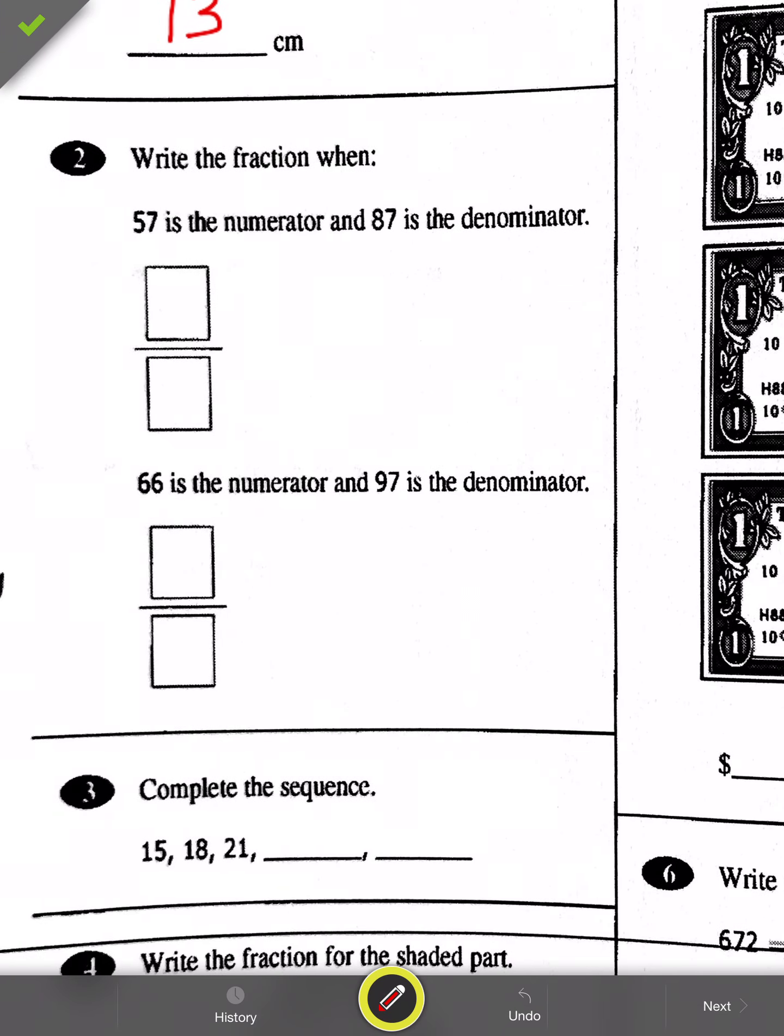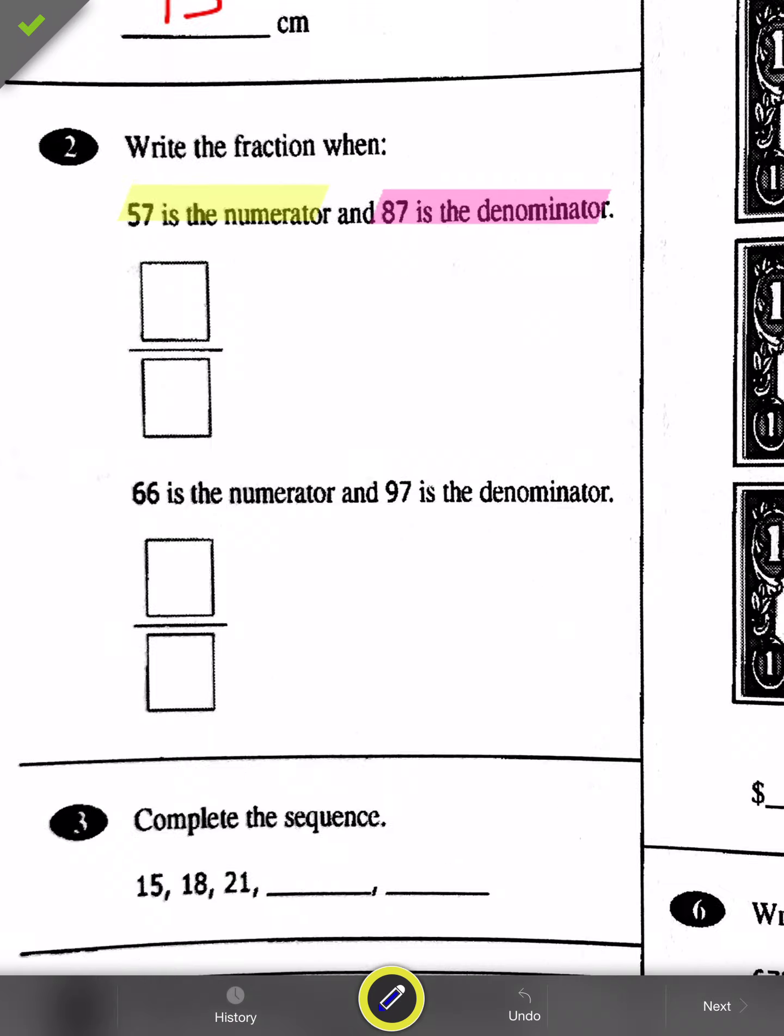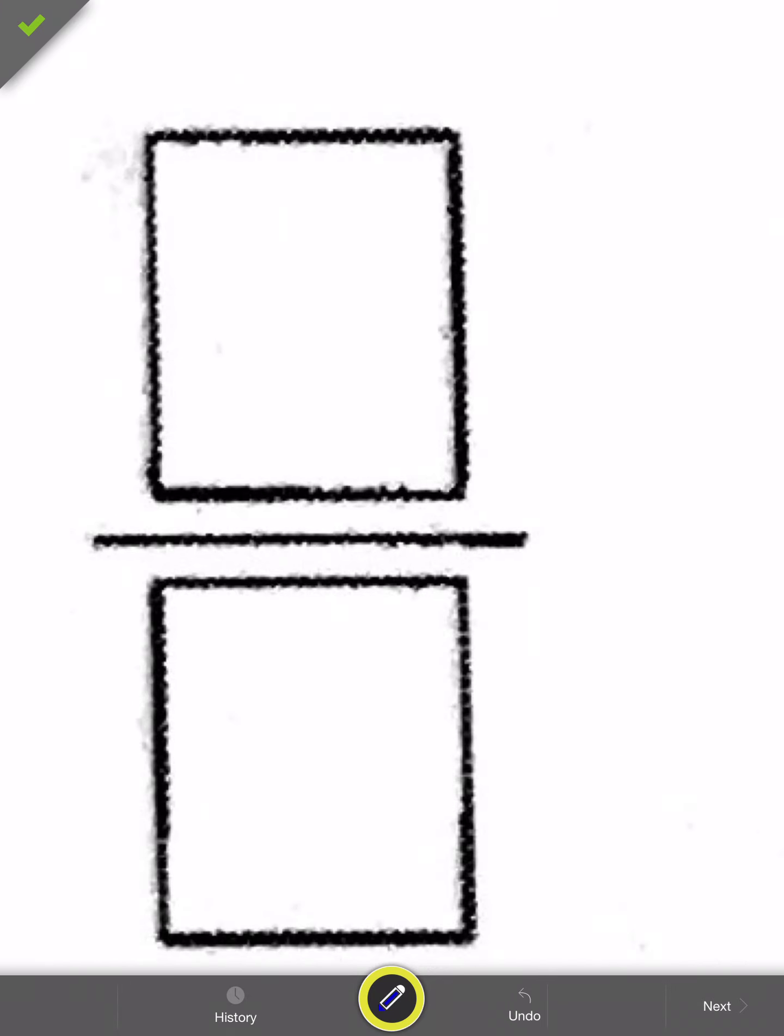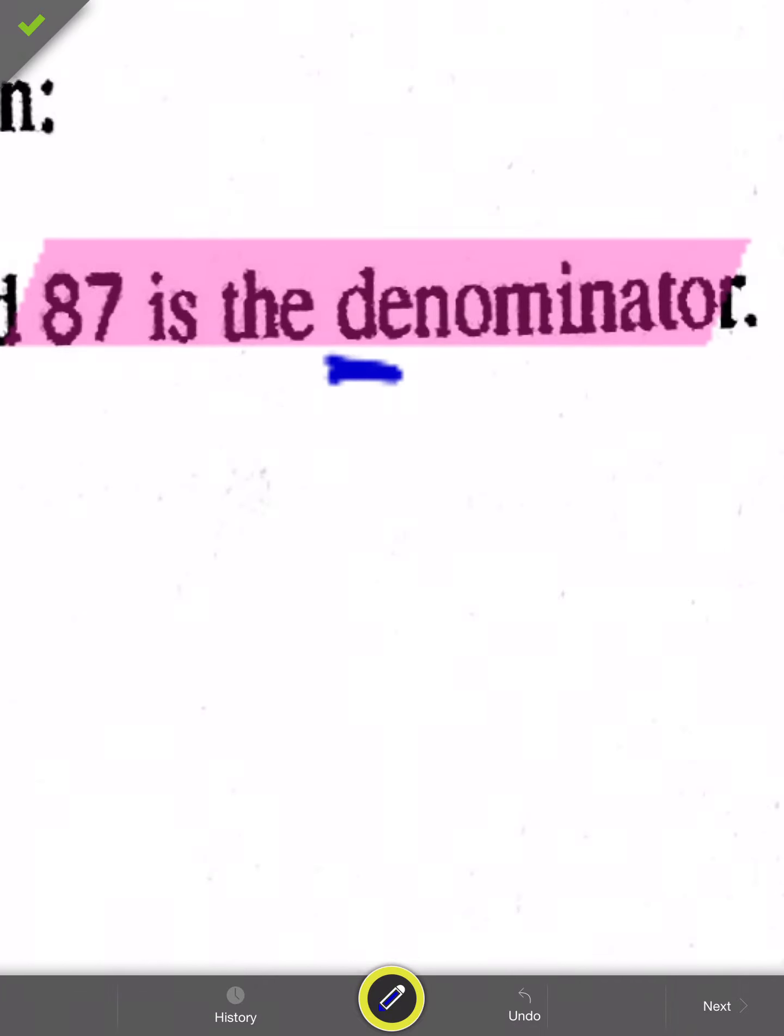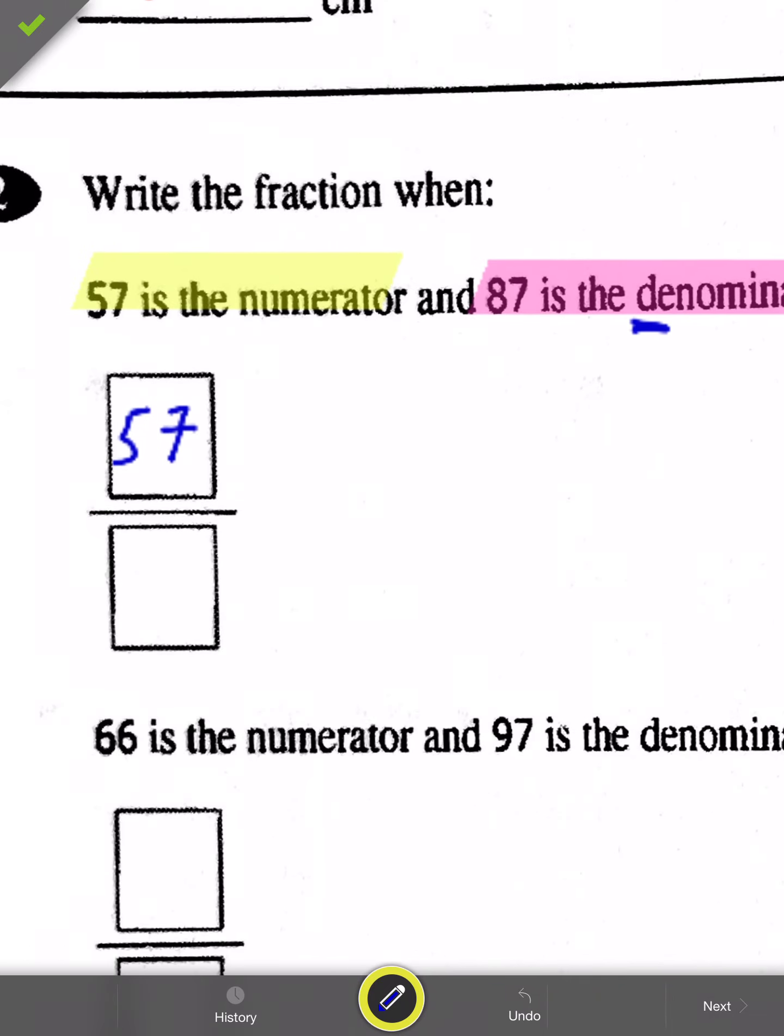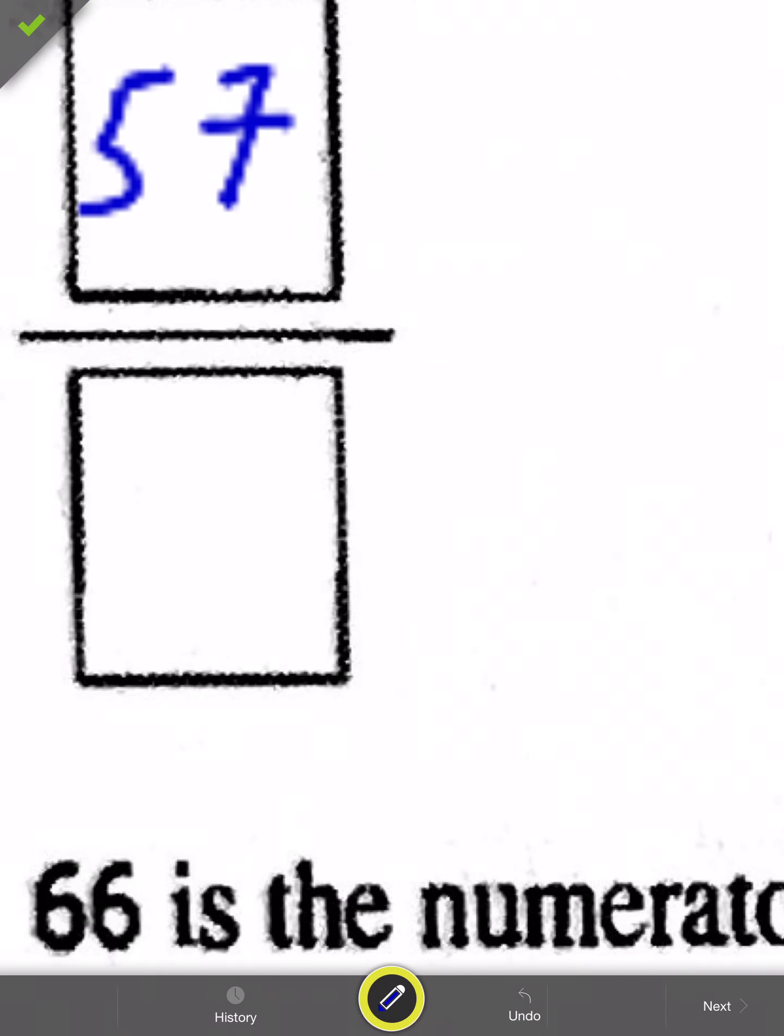Let's take a look at number two. Alright, number two is a two-part question. First part reads: 57 is the numerator and 87 is the denominator. All we have to do is put the number in the right place and you guys and gals are all pros at this and can do this no problem at this point. Numerator, number at the top, is going to be your 57, and denominator - remember the D in denominator represents the down number - in that case it's going to be 87.